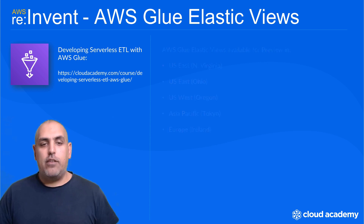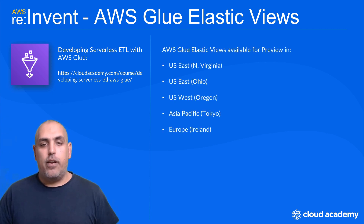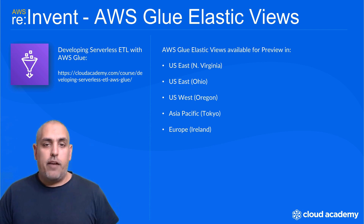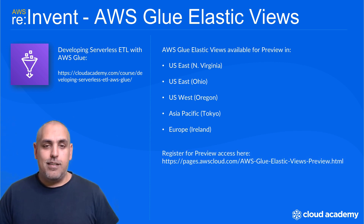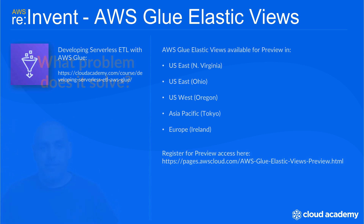At the time of announcing AWS Glue Elastic Views, it's available in preview in a limited number of regions, meaning you have to register to be one of the first to use the service before it becomes generally available. To register, simply follow the link on screen.